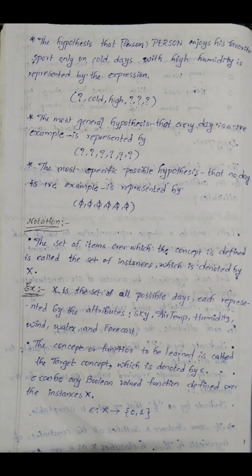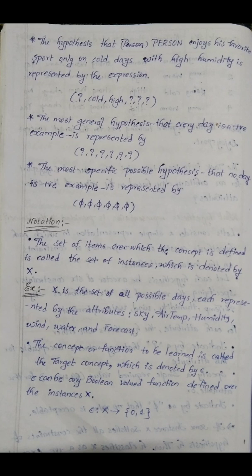The hypothesis that the person enjoys the favourite sport only on cold days with high humidity is represented as a specific expression. If there are no other attributes, you can use question marks in place. So temperature is cold and humidity is high — and for sky and other attributes, question marks are used.